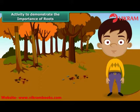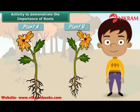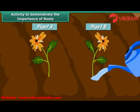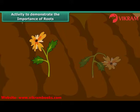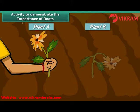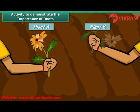Let us perform an activity to demonstrate the importance of roots. Take two plants A and B. Cut off the roots of plant B. Plant both in the soil and water them every day. After a few days, plant A appears as healthy as it was on the first day, whereas plant B appears wilted. This proves that roots absorb water and minerals and transport them to the other parts of the plant. Now try pulling the two plants out from the soil — plant A is firmly attached because of its roots, so it is difficult to pull out. However, plant B, which has no roots, comes out easily. This shows that roots anchor plants firmly in the soil.